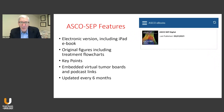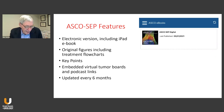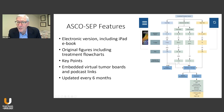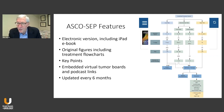Some of the features of ASCO SEP — hopefully you'll be able to access the chapter that Dr. Einstein and I wrote for genitourinary cancers. It includes an electronic version including an iPad ebook, original figures including treatment flow charts, key points embedded within tumor boards and podcast links, and it's updated every six months. Here's one of the figures included in our chapter, available on the iPad. When discussing a patient with, for example, favorable or unfavorable intermediate risk prostate cancer, I can pull this graphic up in the clinic and help the patient understand the issues and potential nodal points for treatment decisions.